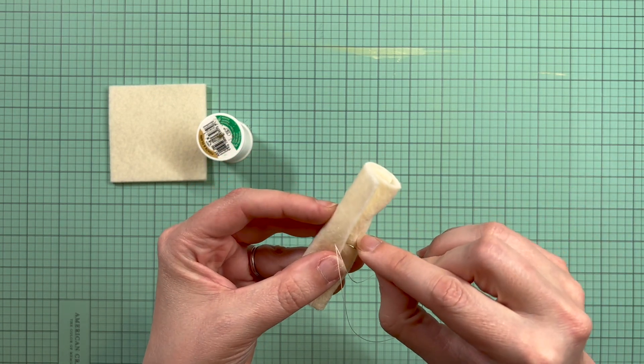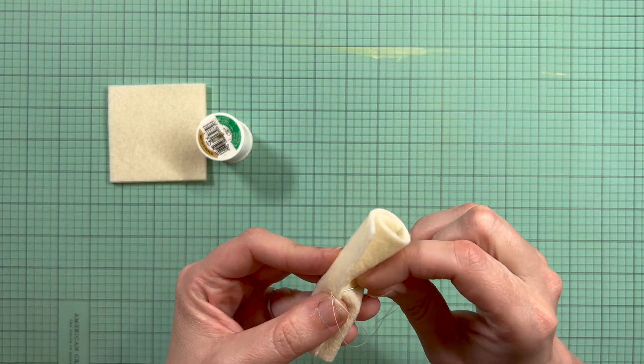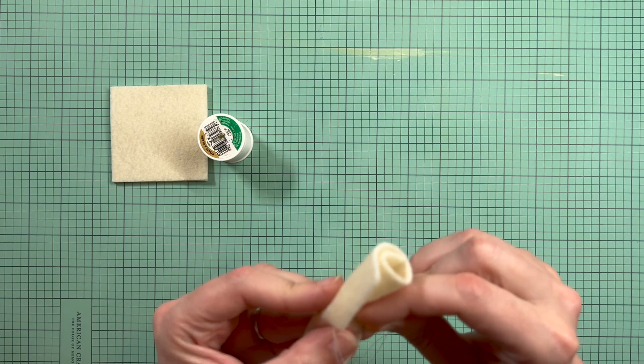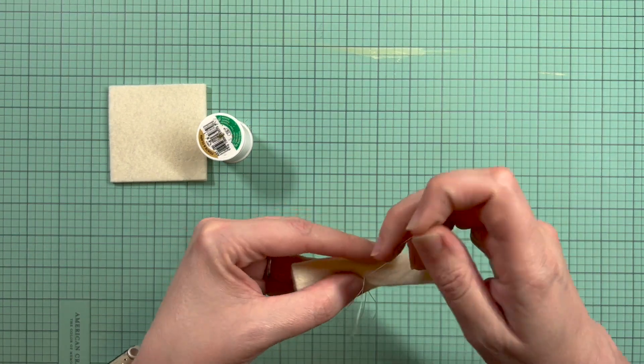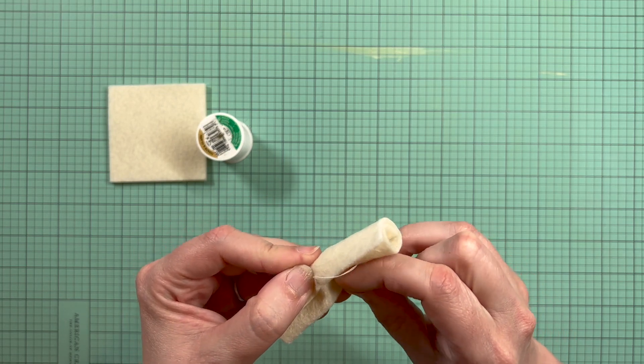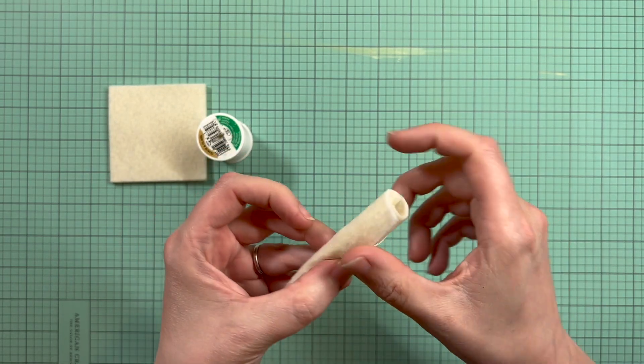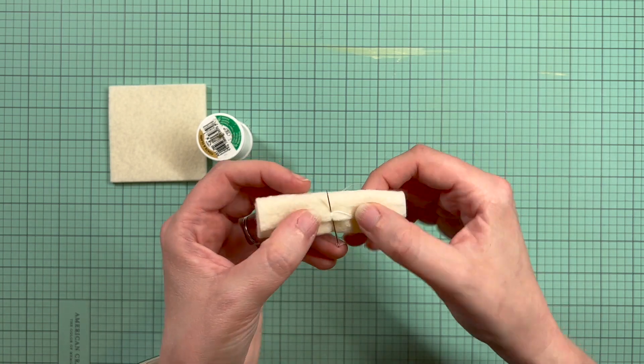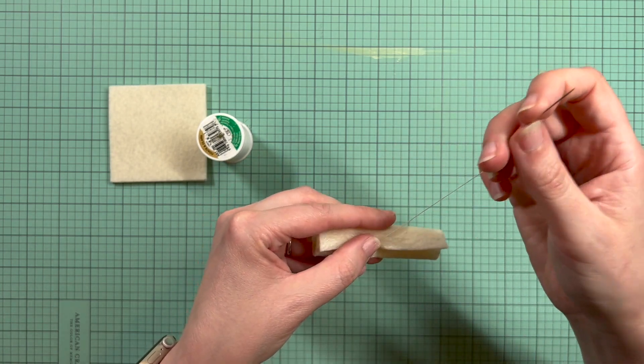And then I'm just going to tack it to the rest of the roll. I'll probably do a couple stitches here. I'm not doing too many stitches. I don't want it to pucker the fabric at all. And I'm not doing it too tight either.